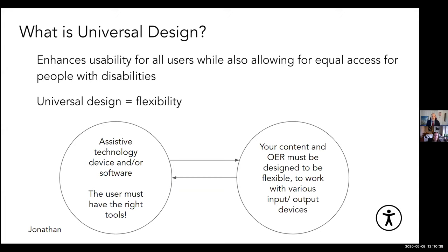Students who are deaf may need captioning. Students with learning disabilities may use captioning. Students who are blind may need screen readers. People who may not be able to use pointing devices — whatever tool someone has, that's their tool. But if you don't design your educational resources to be flexible, students cannot access those educational resources. You have to design your material, your content, your resources to be flexible. Universal design means flexibility, and it helps students with disabilities, but it's much broader than that.